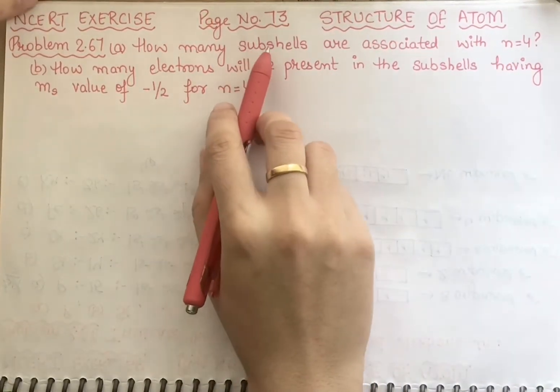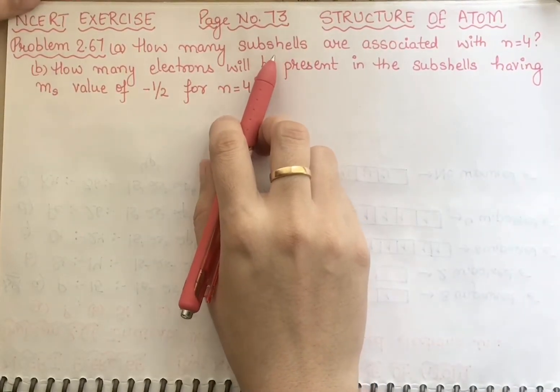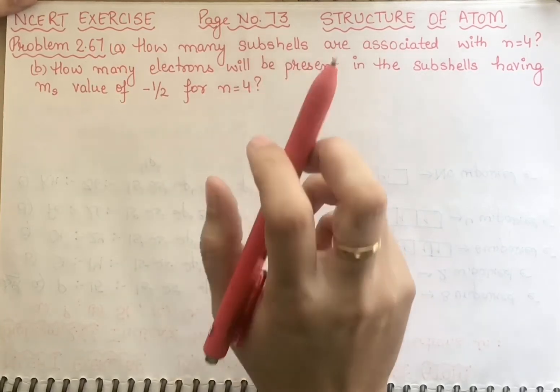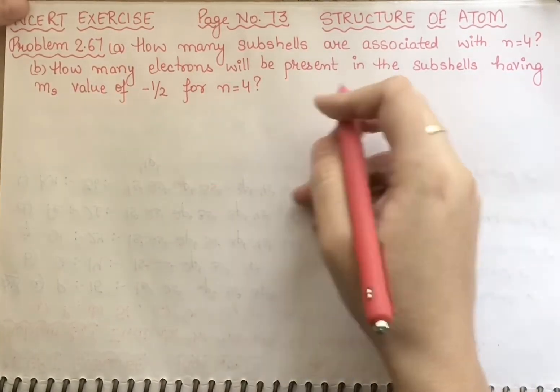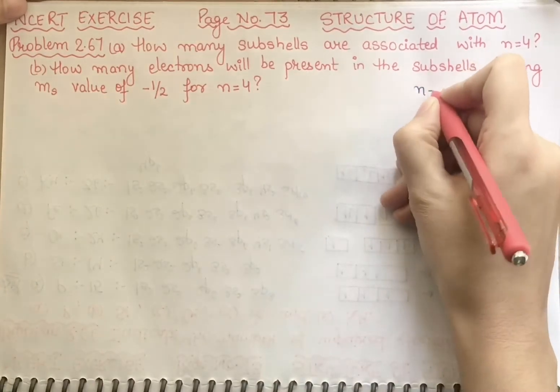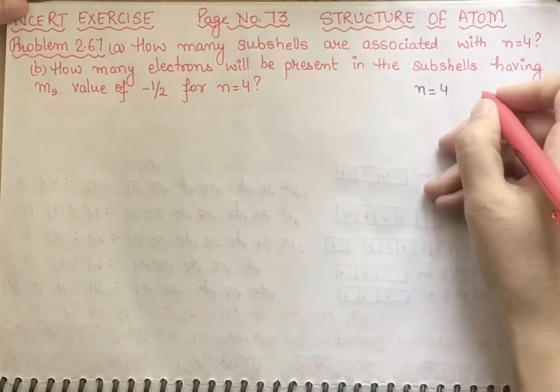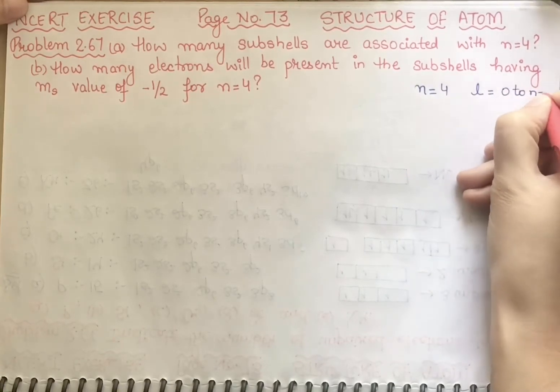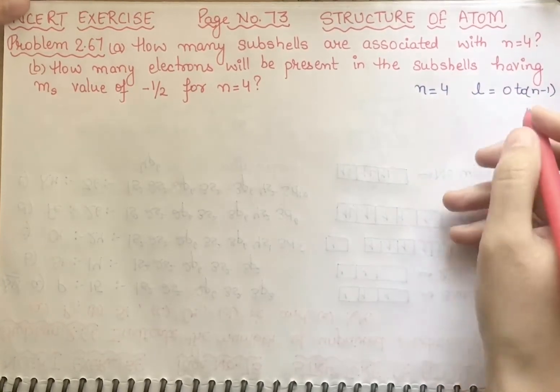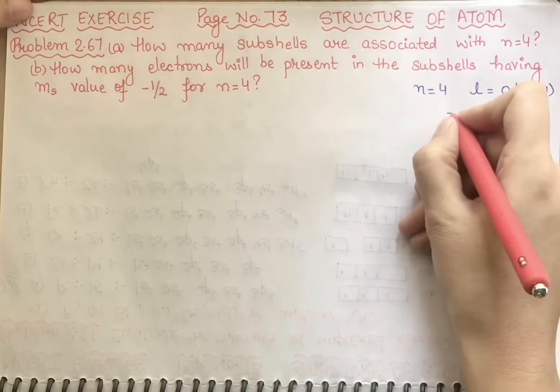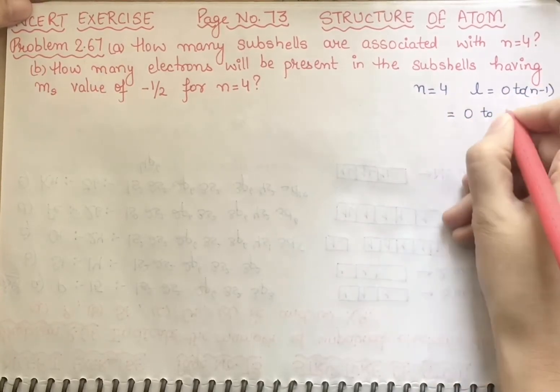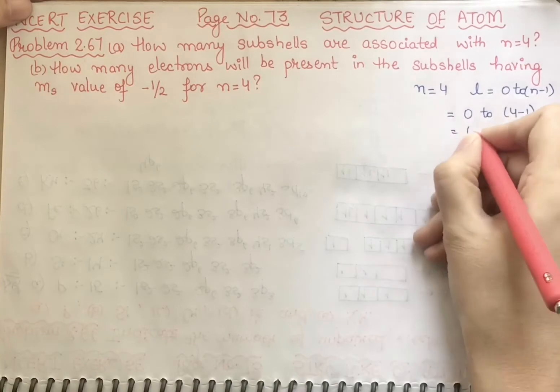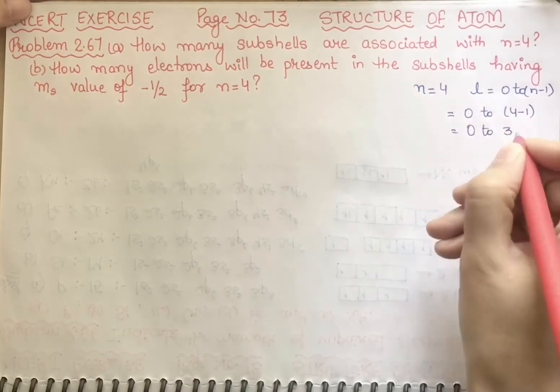I asked you how many subshells exist in it. Subshell means that it is talking about orbitals. Now you can write that if n is equal to 4, then l is equal to 0 to n minus 1. So what does 0 to n minus 1 mean? 0 to n means 4 minus 1, so it will be 0 to 3.